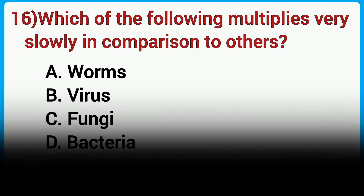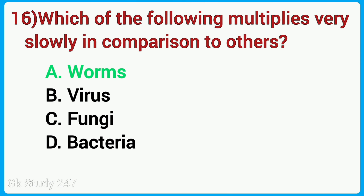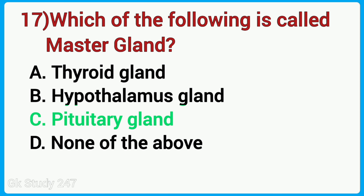Which of the following multiplies very slowly in comparison to others? Which of the following is called the master gland? Answer is pituitary gland.